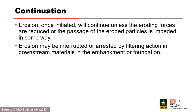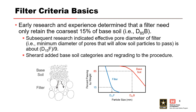Thus, erosion may be interrupted or arrested by filtering action in downstream materials in the embankment or foundation. Dam engineers have known since the 1950s and 1960s that the most efficient way of stopping the erosion process is to zone the dam and to provide filters.